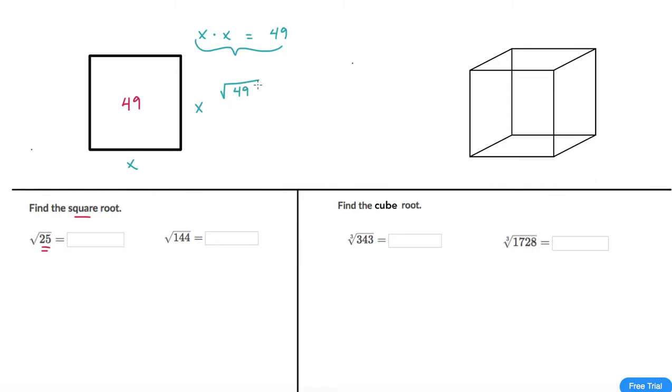But instead of setting it up like this we use this symbol, the square root symbol or the radical. And underneath is the number you're trying to find the base of. So the square root of 49 is essentially saying what number times itself gets you to 49. Now in this case 49 is a perfect square so the answer to that is 7.